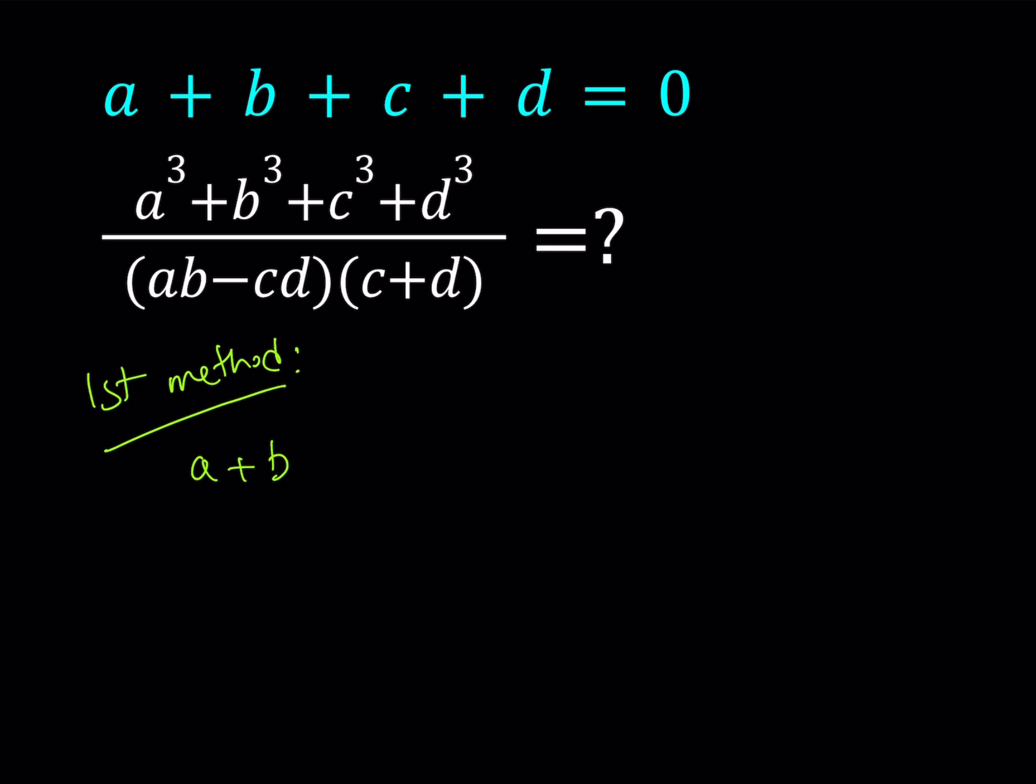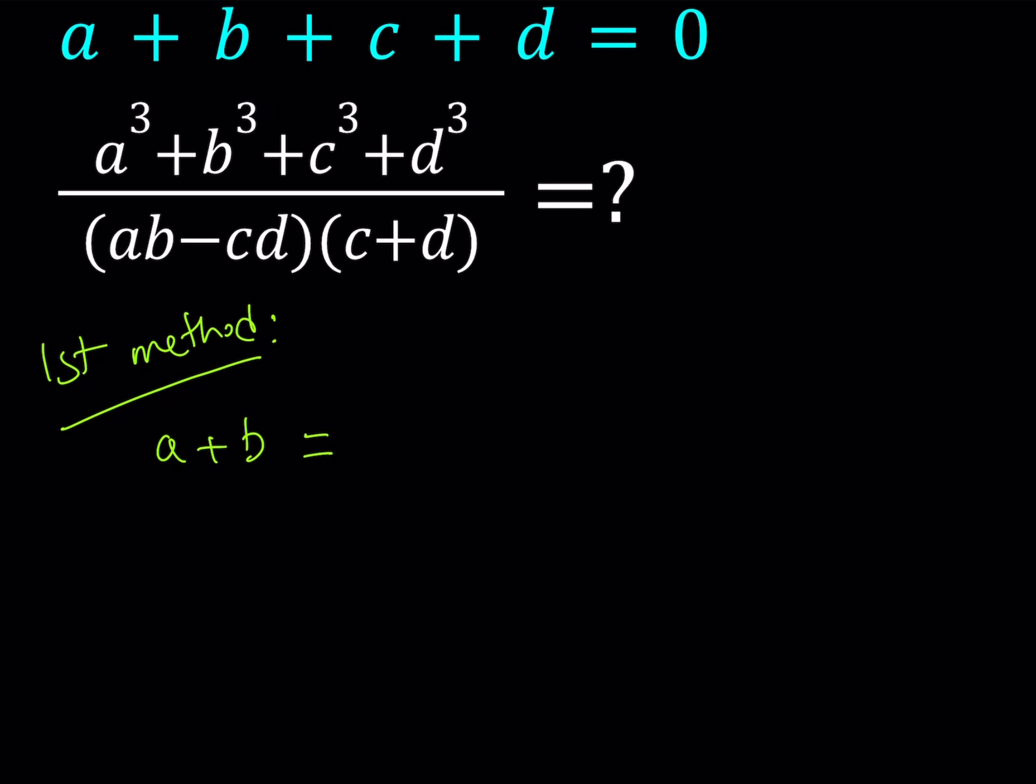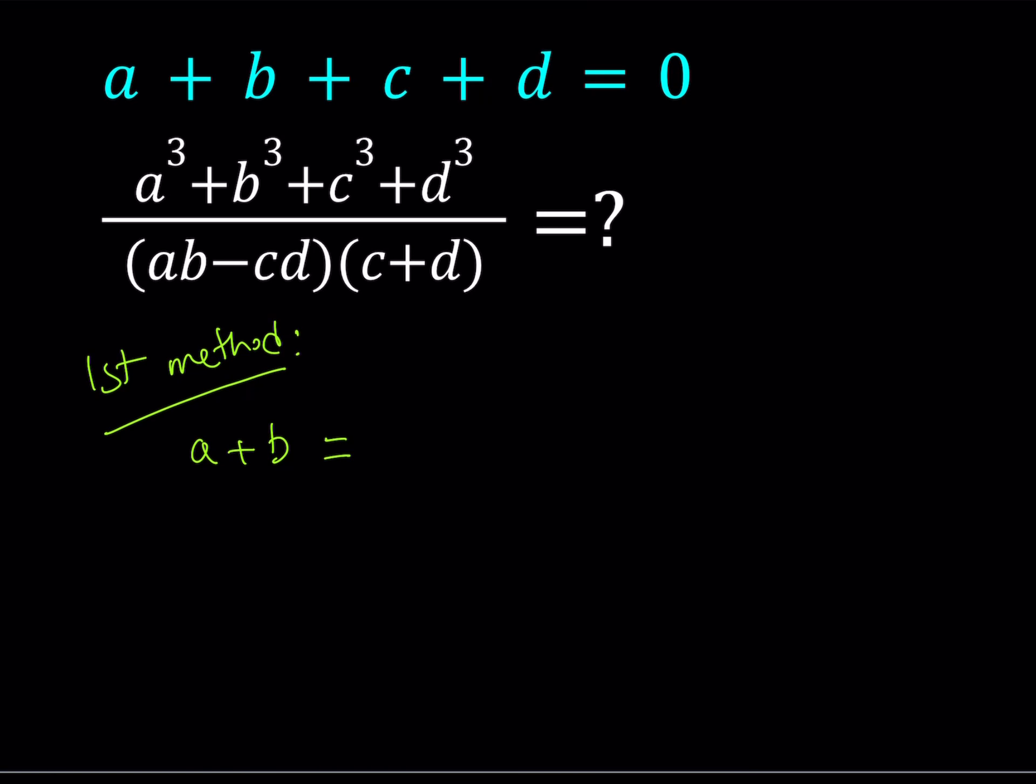I would like to isolate A plus B on the left hand side and take C and D to the right hand side. So I can basically write this as A plus B equals the opposite of C plus D, since their sum is 0, and then cube both sides.